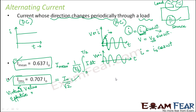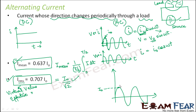Let us connect the three values I₀, I_mean, and I_RMS on a graph. I₀ is the peak value of current. I_mean is approximately 0.637 times I₀, so roughly 0.6 times — slightly above half of the peak. I_RMS is 0.707 times I₀ — slightly above I_mean. So on the graph, the highest point is I₀, then IRMS below it, and I_mean just below that.